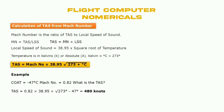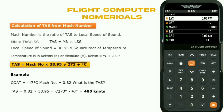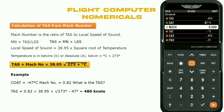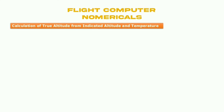On the flight computer, go to airspeed, enter outside air temperature of minus 47 degrees Celsius, and enter Mach number 0.82. The result is TAS of 480 knots. Next we'll look at calculation of true altitude from indicated altitude and temperature.